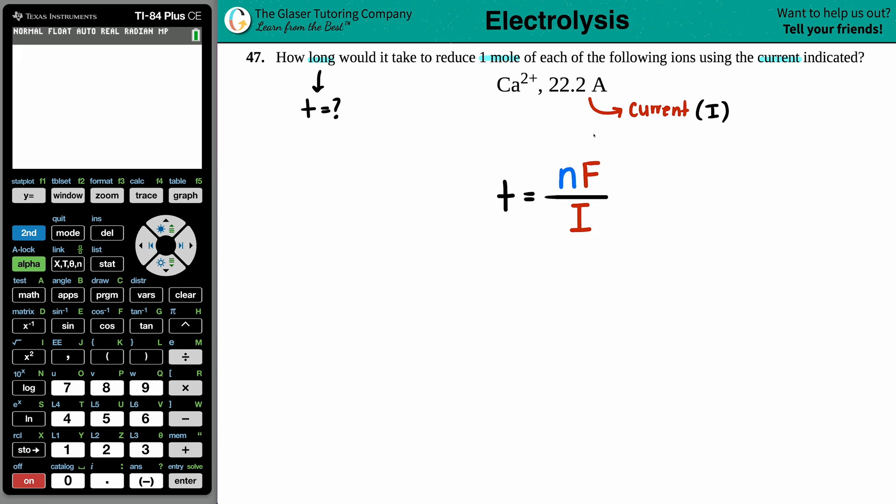We already talked about the current, right? That's why you see this I here. That's the 22.2 amps. Now, F is Faraday's constant, right? It's a constant number, 96,485. If we want to know the units here, it's Coulomb per mole.